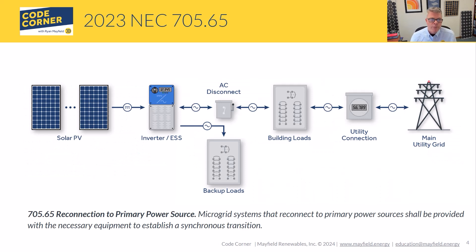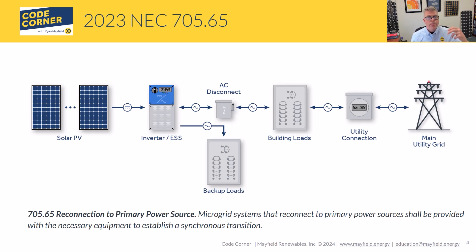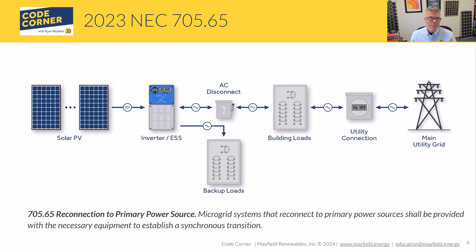Section 705.65 covers reconnection to a primary power source. Microgrid systems that reconnect to a primary power system shall be provided with the necessary equipment to provide a synchronous transition — these are our microgrid interconnect devices, which we'll cover in the next video. In a small home or residential application, where you have the grid coming into your main panel and a solar plus storage system feeding backup loads, that connection and reconnection happens within the inverter ESS system.